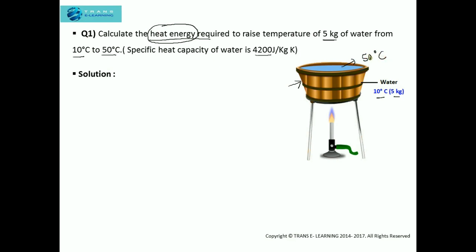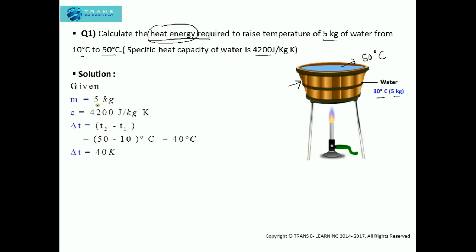The first step is to write what is given and what needs to be found, so that it becomes easy for us to solve the question. Mass is given as 5 kg. Remember one important thing — you have to check the units. The units of the quantities given should be the same as their units in the heat capacity or specific heat capacity given in the question. Here the mass is in kg and the units of specific heat capacity also has kg, so we need not do any conversion, as the specific heat capacity is given as 4200 joules per kg per kelvin.